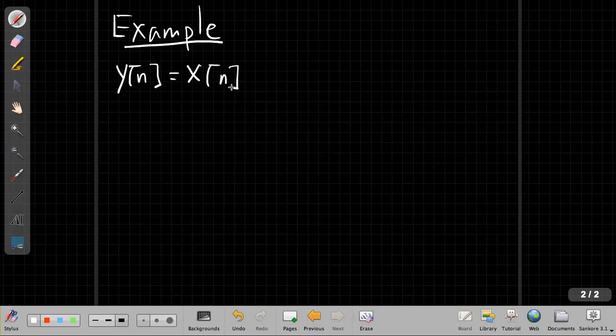Our example system is going to be the modulator, a system that comes up often in communication systems, where my output y of n is equal to my input x of n that's then going to be multiplied by a cosine omega n. We looked at the time invariance property of this in a different video. But for linearity we need additivity and scaling.